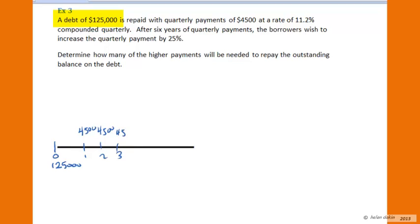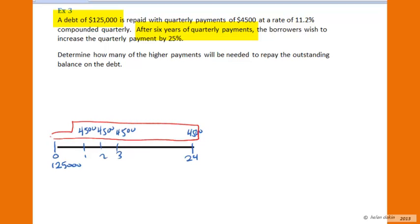There's our annuity shaping up here — $4,500 per quarter. We know that we've actually made six years of quarterly payments against it. Six times four per year is 24, so we've got 24 quarterly payments of $4,500. Now, $4,500 multiplied by 24 is $108,000, and without interest we would only be paying back $108,000, which is certainly not enough to cover the $125,000 loan. The interest rate is 11.2% compounded quarterly, and 11.2% divided by four is 2.8% per quarter.